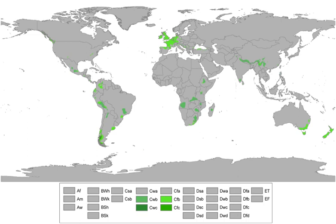Oceanic climates are generally characterized by a narrower annual range of temperatures than in other places at a comparable latitude, and generally do not have the extremely dry summers of Mediterranean climates or the hot summers of humid subtropical. Oceanic climates are most dominant in Europe, where they spread much farther inland than in other continents. Oceanic climates can have considerable storm activity as they are located in the belt of the stormy westerlies.